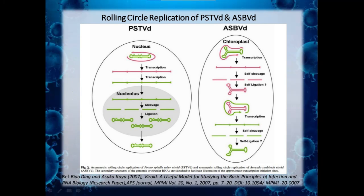In plants infected with members of Pospiviroidae, the viroid plus-strand RNA is imported into the nucleus by the nuclear import machinery. Once inside the nucleus, the viroid positive-sense RNA is copied by a rolling circle mechanism that produces a complementary linear concatemeric negative-sense RNA. These products are further copied to produce a concatemeric linear positive-sense RNA, which is then cleaved by RNase and ligated by DNA ligase 1, thereby giving copies of the Pospiviroidae viroid.